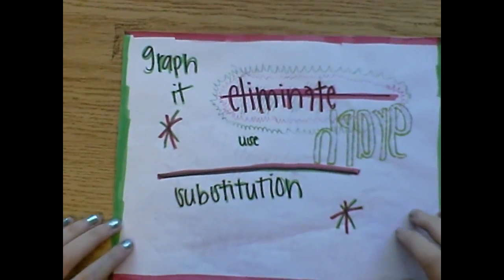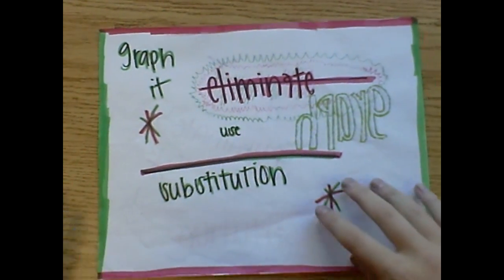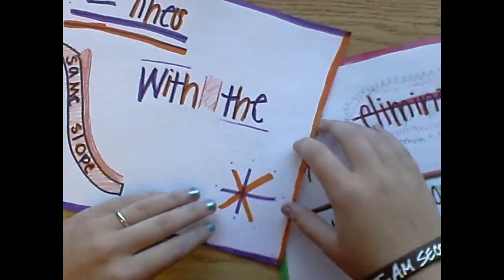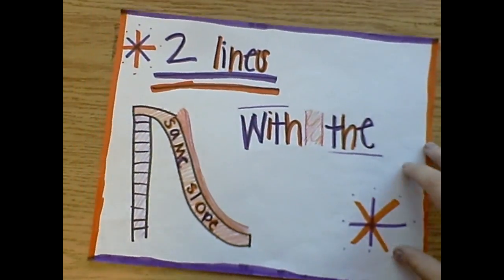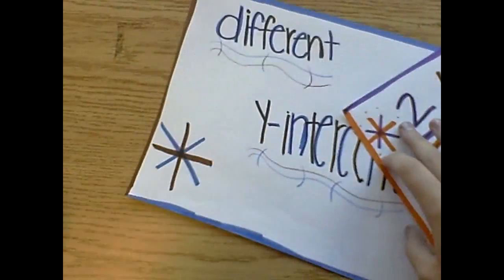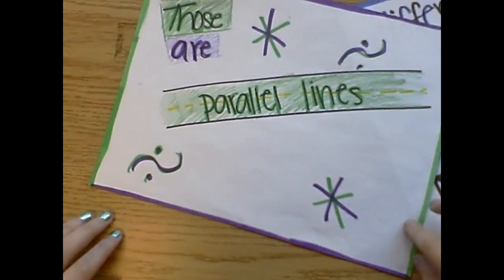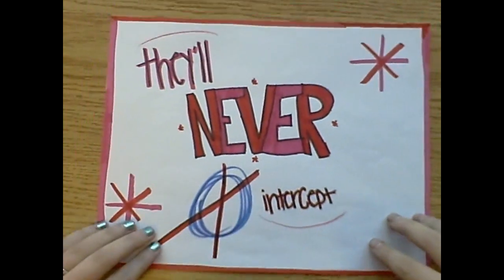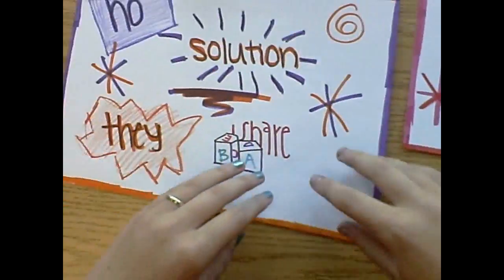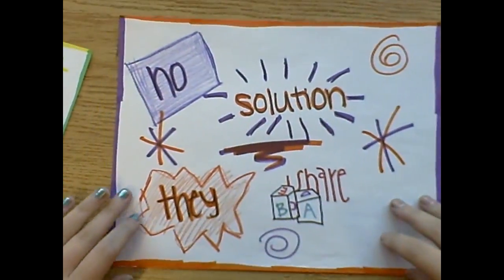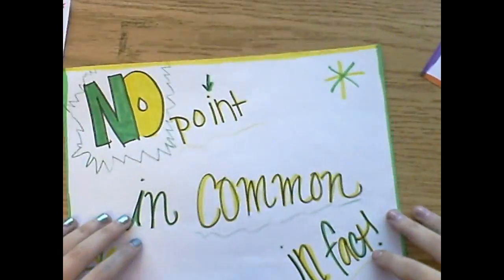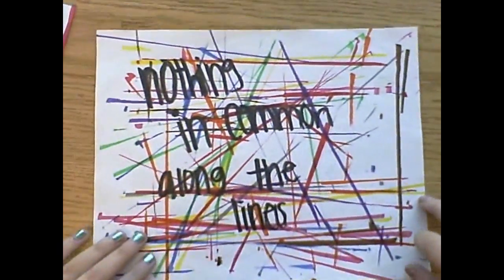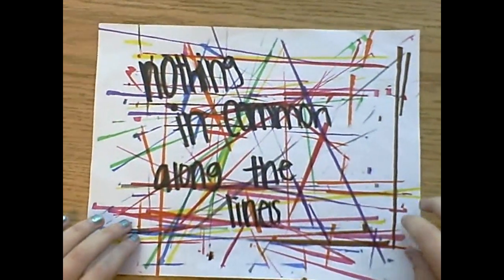Two lines with the same slope and different Y-intercepts — those are parallel lines, yet they'll never connect. There's no solution they share, no point in common in fact. Nothing in common along the lines.